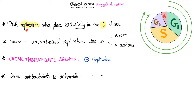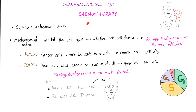Some clinical points: DNA replication means one DNA becomes two DNAs, happening at S phase. Cancer is uncontrolled replication — one mutant cell dividing uncontrollably due to errors or mutations. A chemotherapeutic agent hits those rapidly dividing cells and inhibits replication. The bad news is chemo can affect any of your own rapidly dividing cells, making them most vulnerable. That's why chemotherapy side effects include hair loss and diarrhea — both hair and gut epithelium divide very quickly.